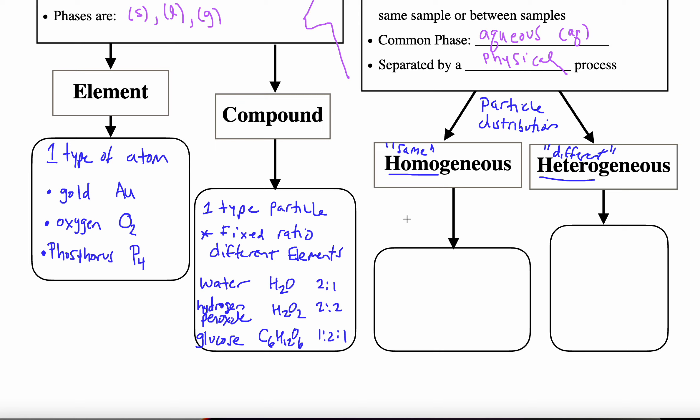In a homogeneous mixture, that means we have the same particle distribution through the whole sample. So we could put it as a uniform distribution. And if I was to draw a picture of a homogenous mixture, I'm just going to use X's and O's, I would have something like this. Trying to show them equally distributed through the sample. So uniform distribution.